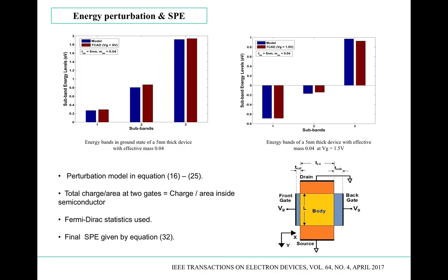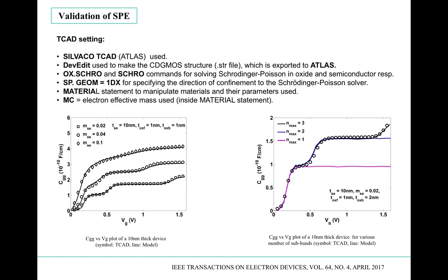We bring all these components together using the charge balance relation: total charge per unit surface area at the two gates equals the charge per area inside the semiconductor. This gives us the final SPE in equation 32 — the final surface potential equation developed through all these processes.